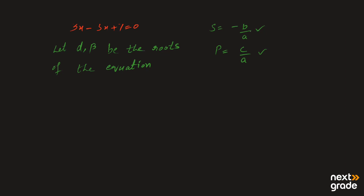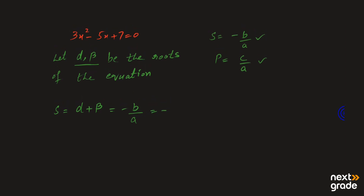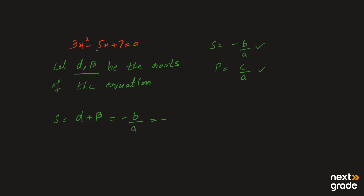تو ہم sum of roots اب find کرنا چاہتے ہیں تو ہم اسی formula کو use کریں گے۔ اگر ہم sum of roots find کرنا چاہتے ہیں تو ہم ان roots کو add کریں گے۔ تو ہم لکھیں گے: alpha plus beta, that is sum of roots (S), is equal to minus b over a. یہاں پہ b کی value دیکھیں — یہ formula کا minus ہے، as it is لگائیں گے۔ اب b کی value دیکھیں گے تو یہ given quadratic equation میں b کی جو value ہے وہ x کے ساتھ والا coefficient ہوگا۔